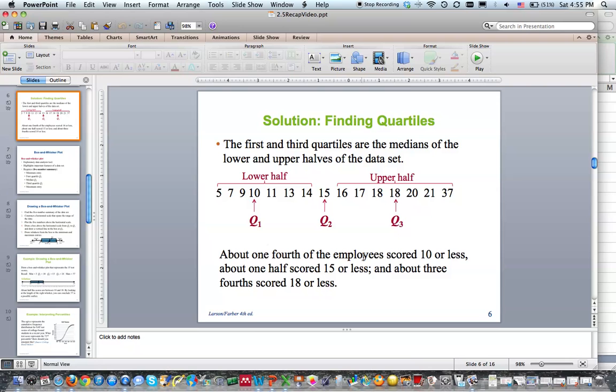So if we look right here, about one fourth of the employees scored 10 or less. Excel told us 10.5. It's a little more accurate. This was done by hand. And about one half scored 15 or less. And about three fourths scored 18 or less. So what these quartiles do is break our data into four parts like we had discussed. This is one part, two parts, three parts, and four parts. So this would be one fourth. Between Q1 and Q2 is another fourth. Between Q2 and Q3 is another fourth. And Q3 and above is yet another fourth. I can say one fourth is below Q1, half is below Q2, and between Q1 and Q3 is half of our data.